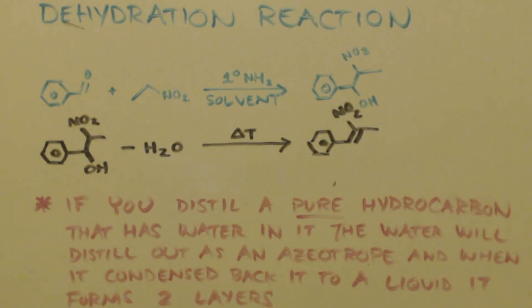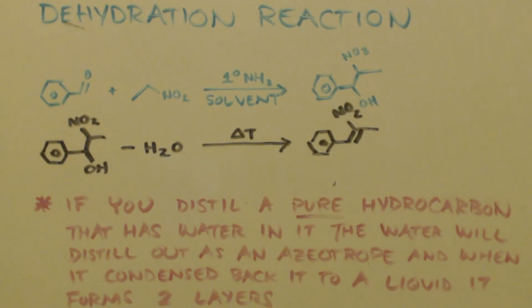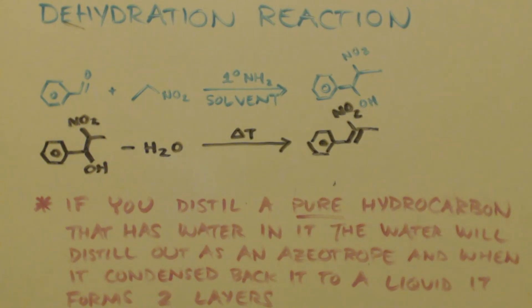It's based on this principle: if you distill a pure hydrocarbon that has a little bit of water dissolved in it, the hydrocarbon will carry some of the water with it as an azeotrope. When it condenses, instead of the water dissolving back into the hydrocarbon, it forms two different layers. That way you can get the water out because it's in a different layer.